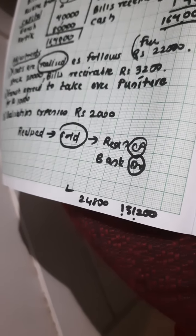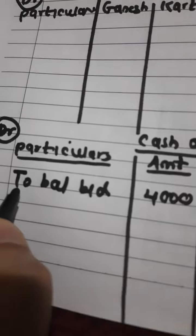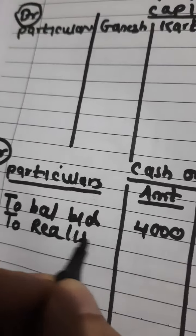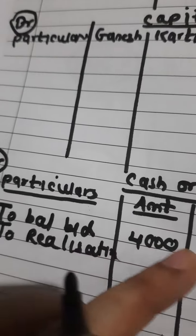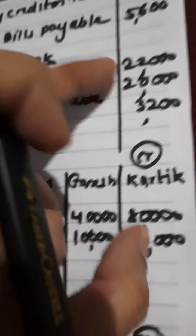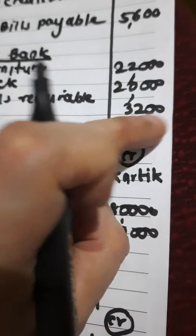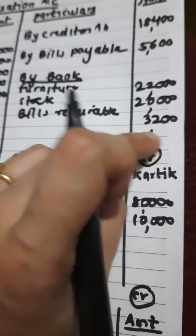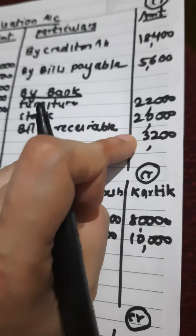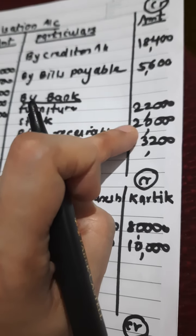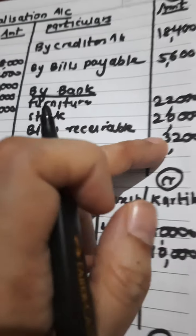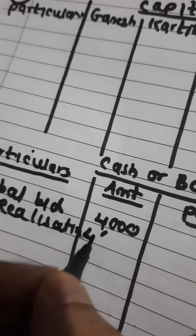I have written one more effect: Realization credit and Bank debit. Where is our Bank account? Here it is. Bank has another effect — 'To Realization.' The amount to write is the total: 22,000 plus 20,000 plus 3,200. All the assets are sold, so find the total and write it in Bank account. 22 plus 20 is 42, plus 3 is 45. So my amount is 45,200.